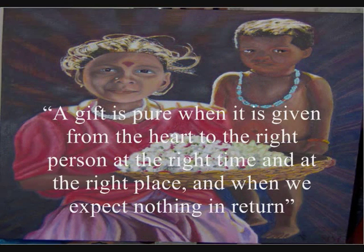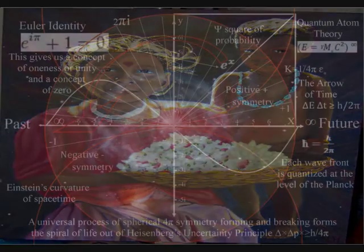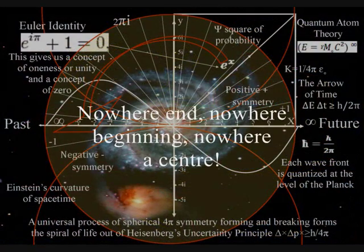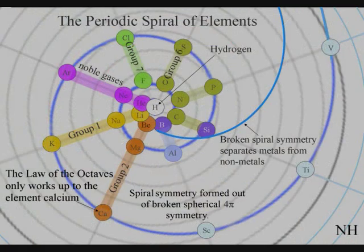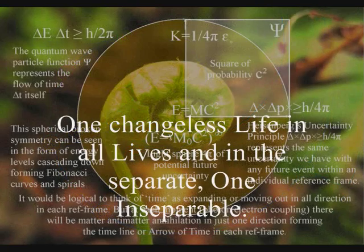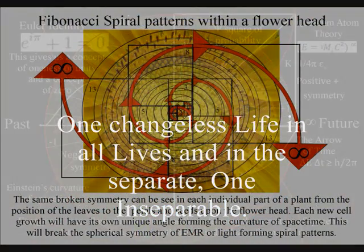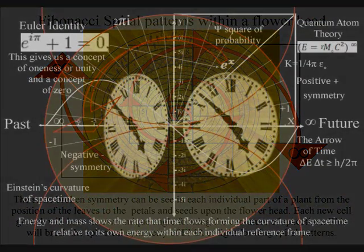This process is totally universal and interactive, from the largest object to the smallest creature, right down to the smallest element of the periodic table, which will slow the rate that time flows, forming a curvature of space-time relative to its own energy or mass.